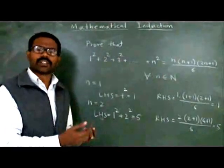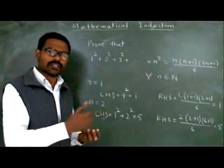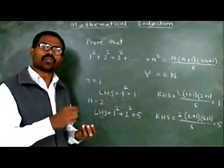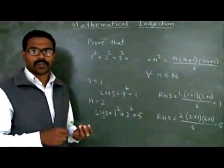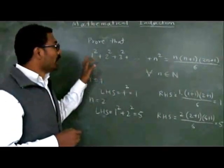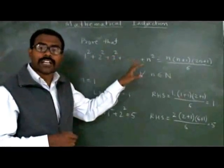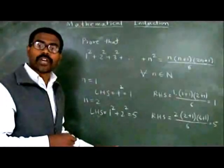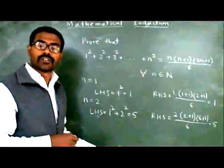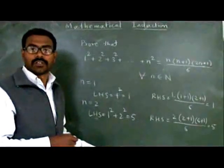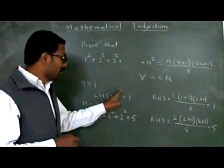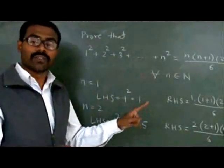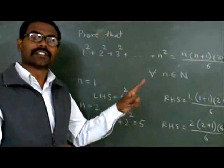We can again check for n=3, n=4, and so on. But from this, can we say the formula is true for all natural numbers? We must check all natural numbers, but there are infinitely many. Are we able to generalize just by taking values 1, 2, 3, 4 and then say this is true for all natural numbers?